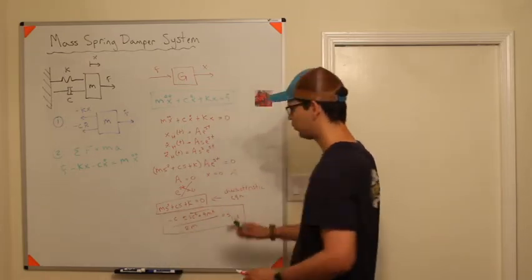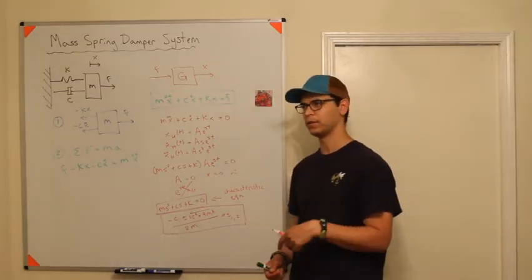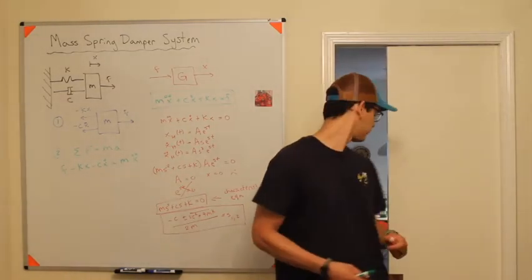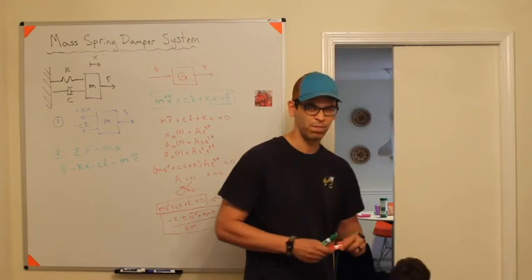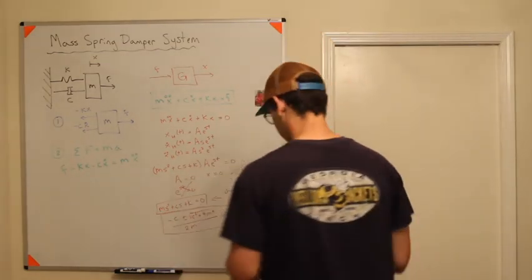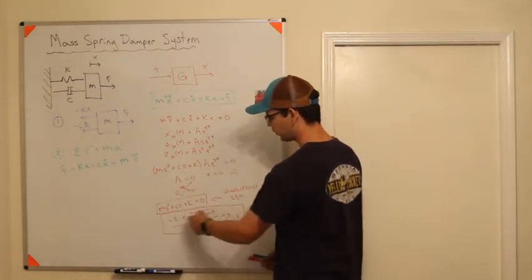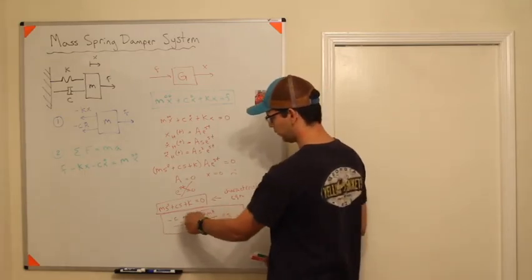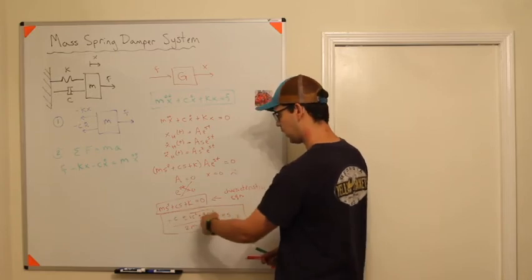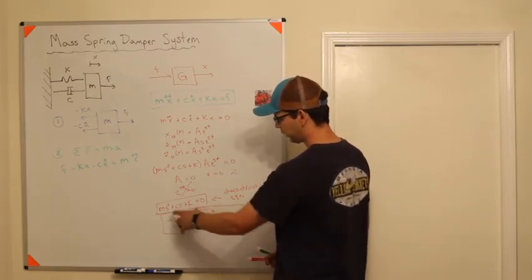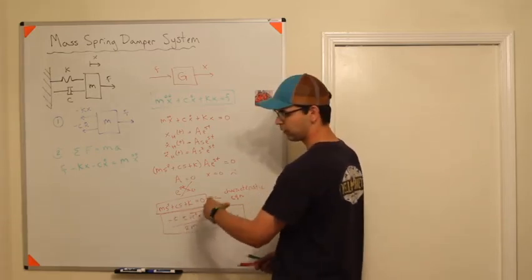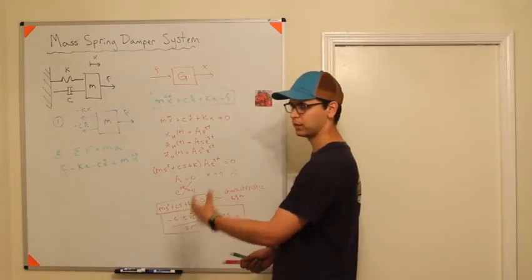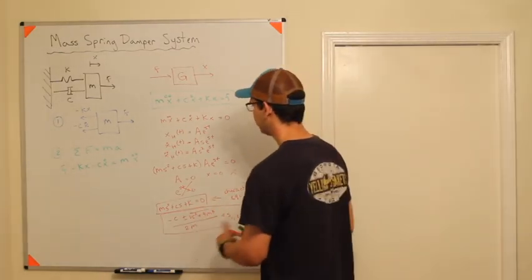This is going to give you two roots, so you're going to have two different solutions here - one which is negative c plus and one which is negative c minus. Depending on your values of m, c, and k you might have critically damped, over damped, or under damped. I'll talk about that in another video.